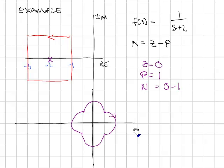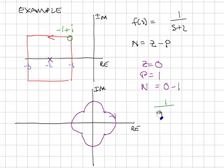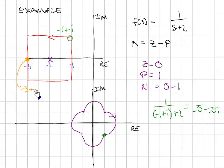The resulting curve is shown here. I took the points on the red curve, substituted them into the equation, and plotted the corresponding points on the purple curve. For example, the point minus 1 plus i substituted into 1 over (minus 1 plus i plus 2) gives 0.5 minus 0.5i. Another point, minus 3 plus 0i, gives 1 over (minus 3 plus 2), which equals minus 1. Continuing this for all points on the red curve, you find it maps into the purple curve.